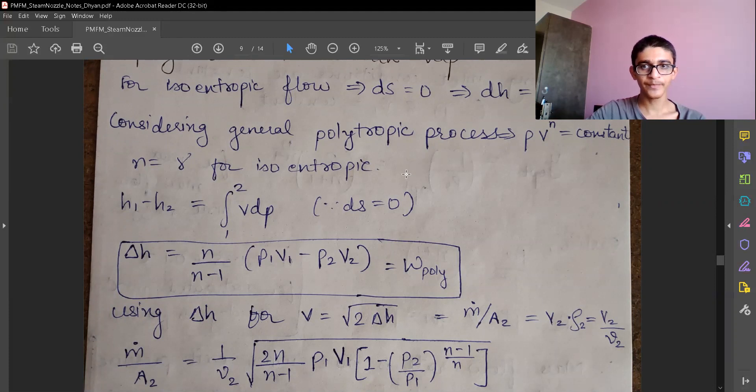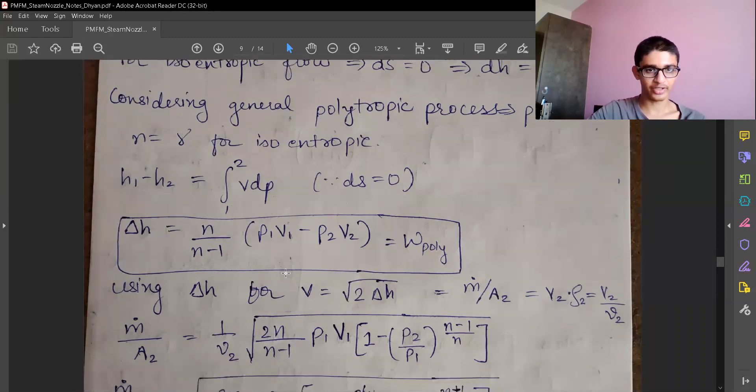And that is PV raised to N equals constant, and when we put N equals gamma, we have isentropic relation. So we can get enthalpy equals VdP. We can integrate and substitute PV raised to N equals constant and get the value of delta H, that is change in the enthalpy. Change in enthalpy equals specific work done in that polytropic process—specific work done because it is specific enthalpy divided by mass, so it is per mass flow rate.